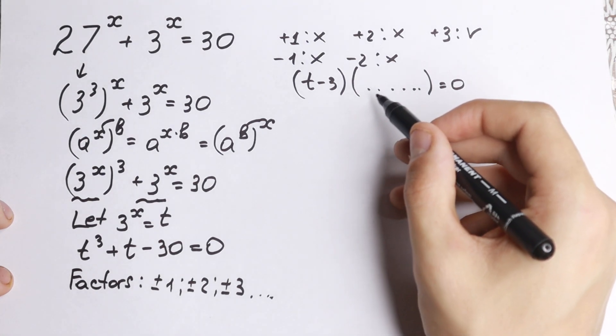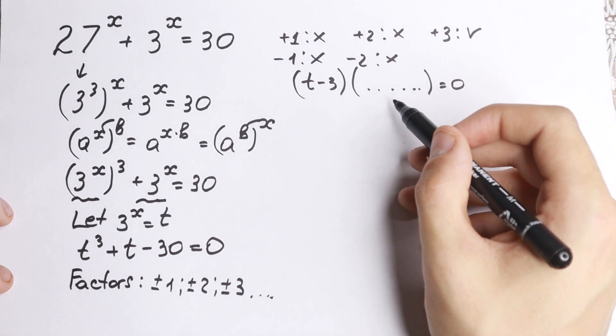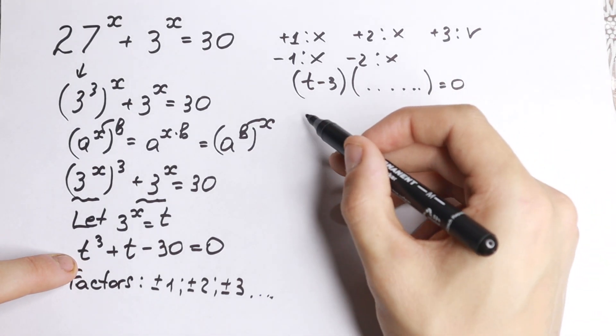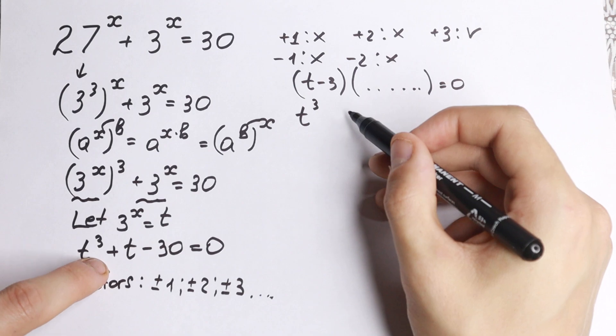How can we find these parentheses? Maybe we will have more real roots. So firstly, we have t cubed. I write this t cubed. We don't have t square right here.